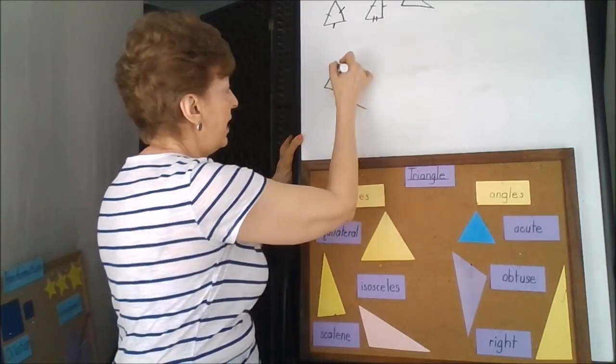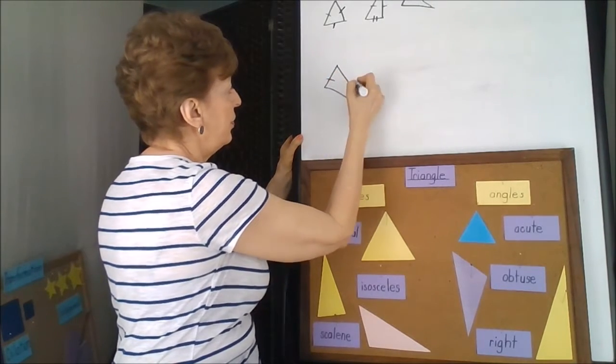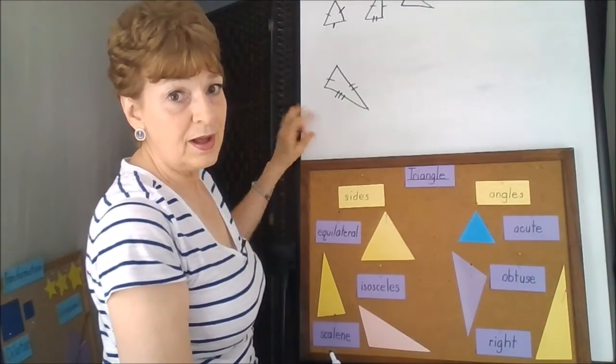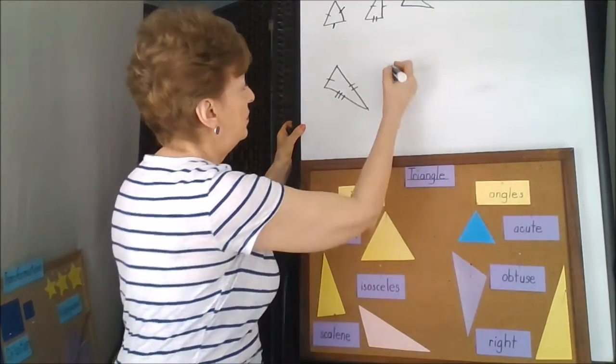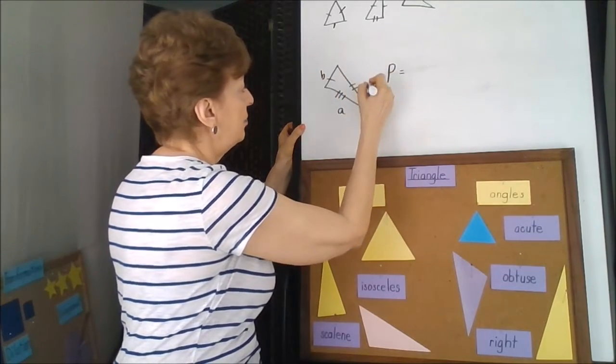Our scalene triangle has three sides that are different. So the perimeter of this would have to be A plus B plus C.